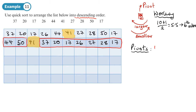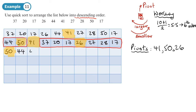The first pivot was 41. The next two pivots are 50 (right of center in the left sub-list) and 26 (dead center of the right sub-list). On the left side, 44 moves over to the right of 50. My 41 stays where it is as it isn't being pivoted around anything at this stage.